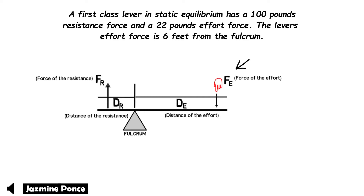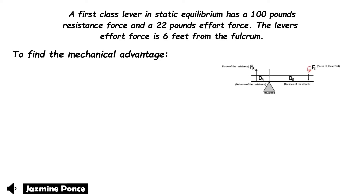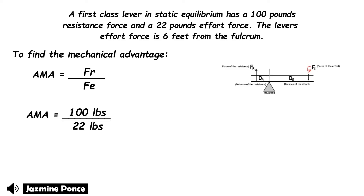The FE means the force of effort or input. We use the formula: AMA (actual mechanical advantage) equals FR divided by FE. So we have 100 lbs resistance force divided by 22 lbs effort force. Using a calculator, we get an actual mechanical advantage of 4.55.